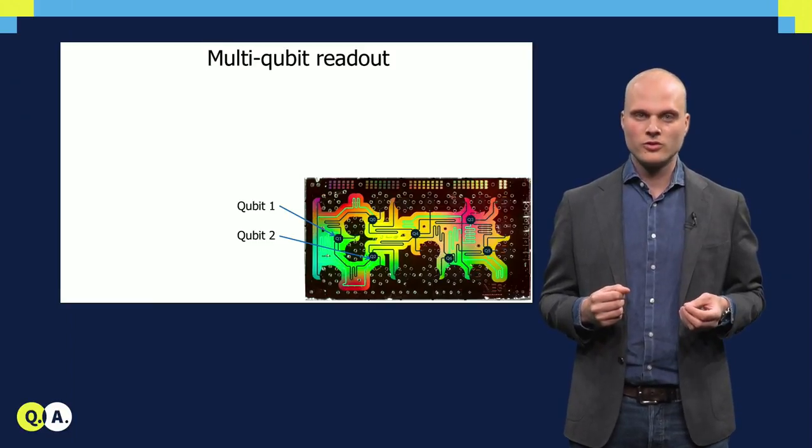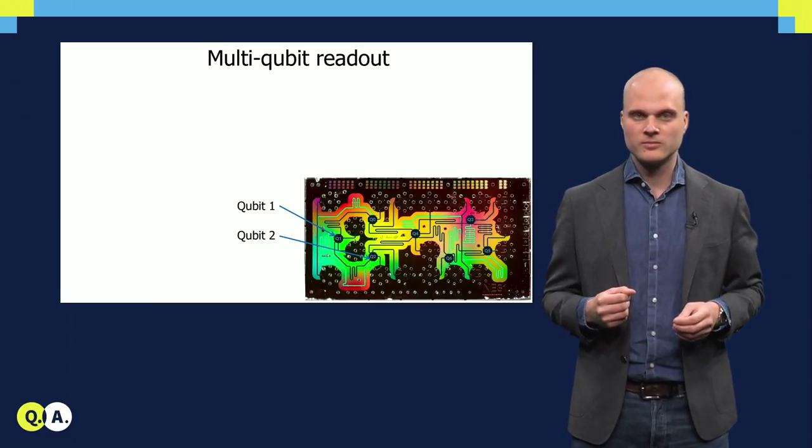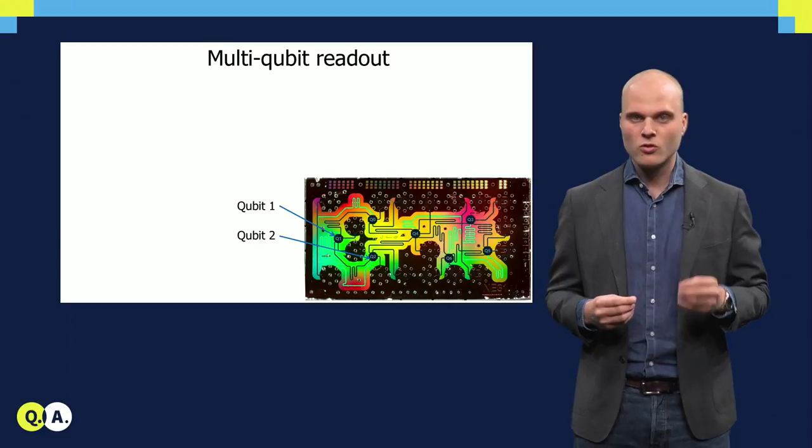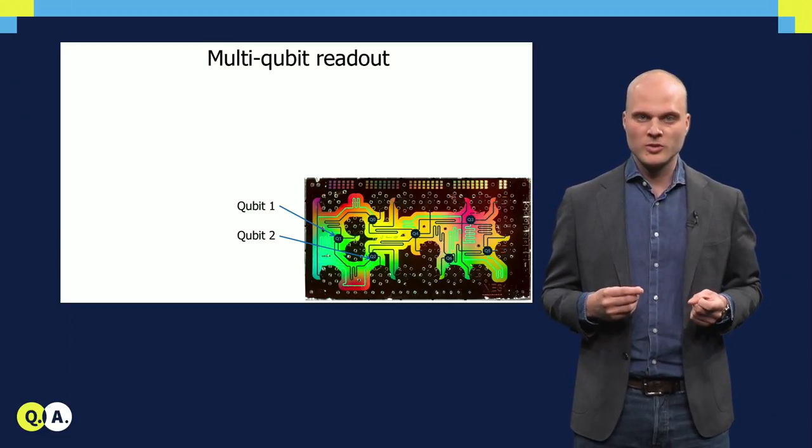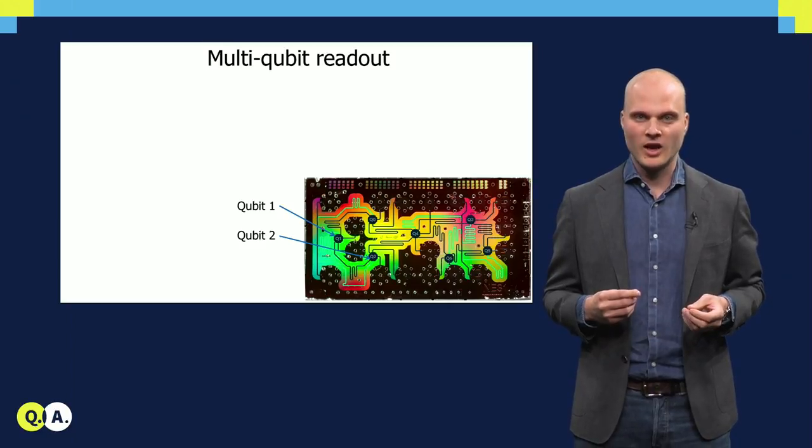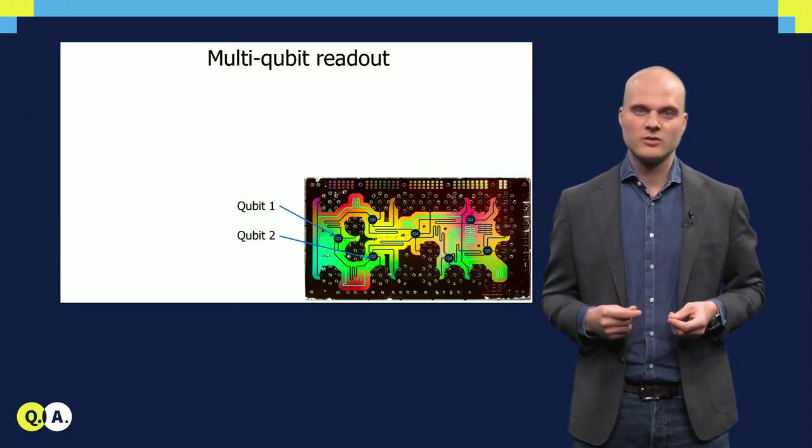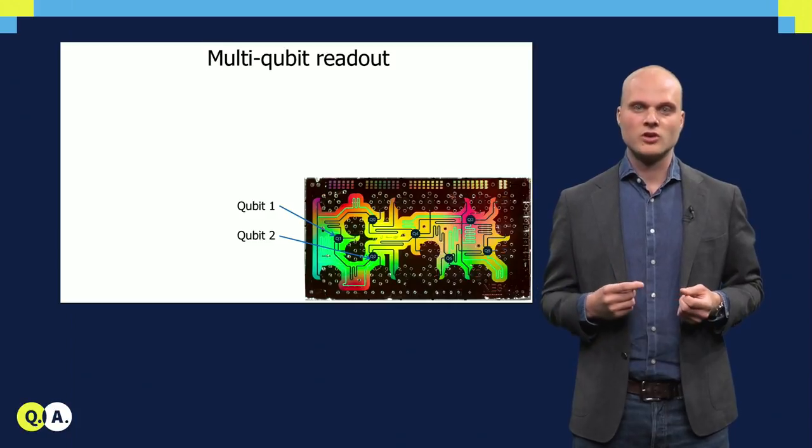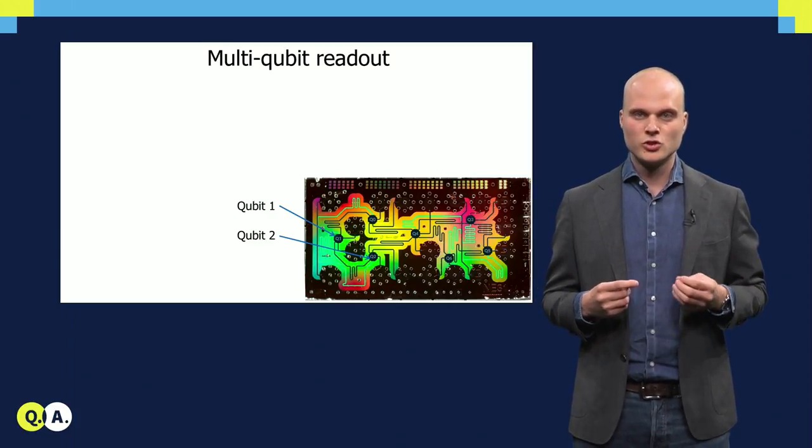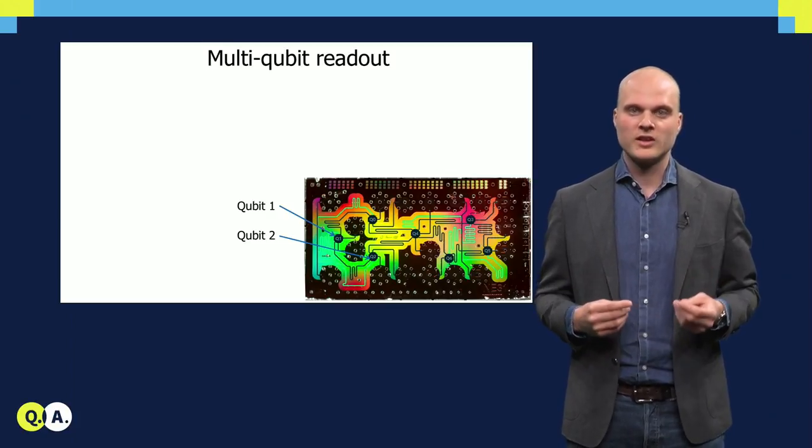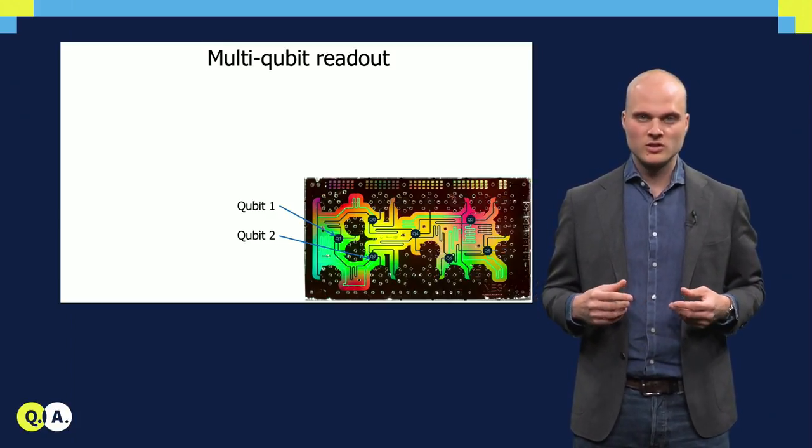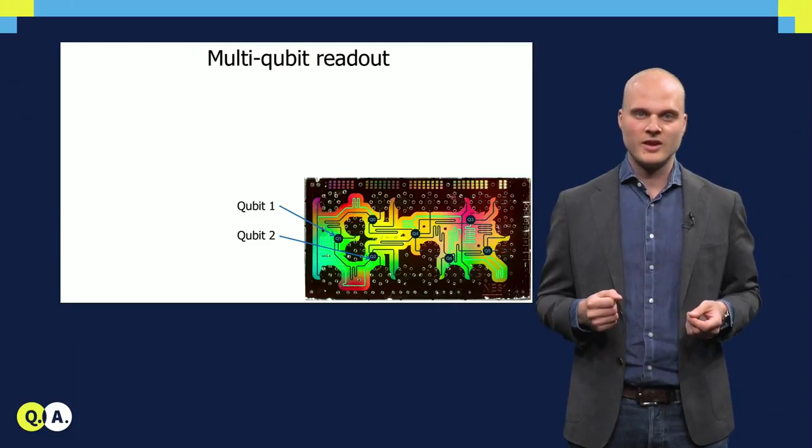I've just shown you the readout of one qubit. Of course, a full quantum computer consists of many quantum bits, and these all have to be read out at the same time. To allow simultaneous readout, we couple each qubit to its own readout resonator, and choose the lengths such that they all resonate at a distinct frequency, just like the different strings in a piano.